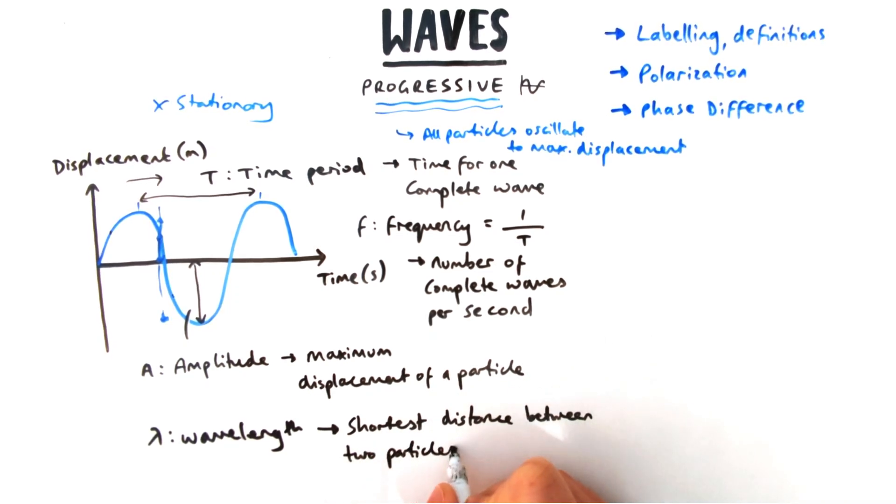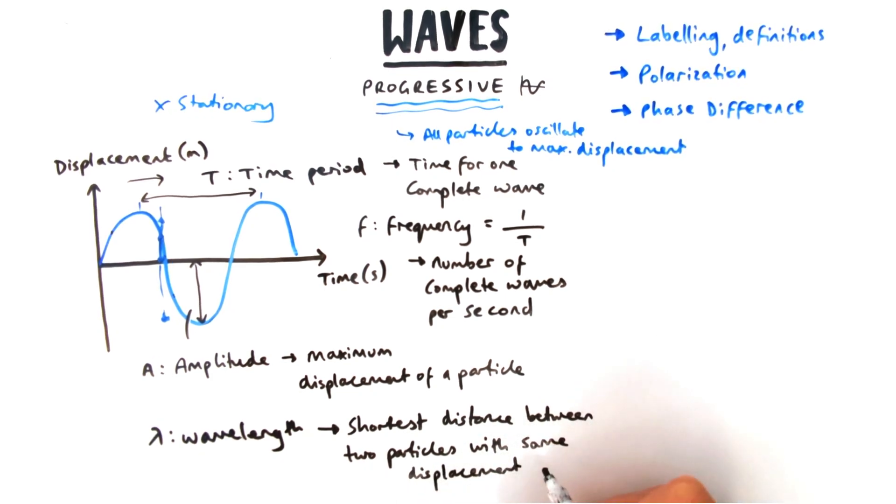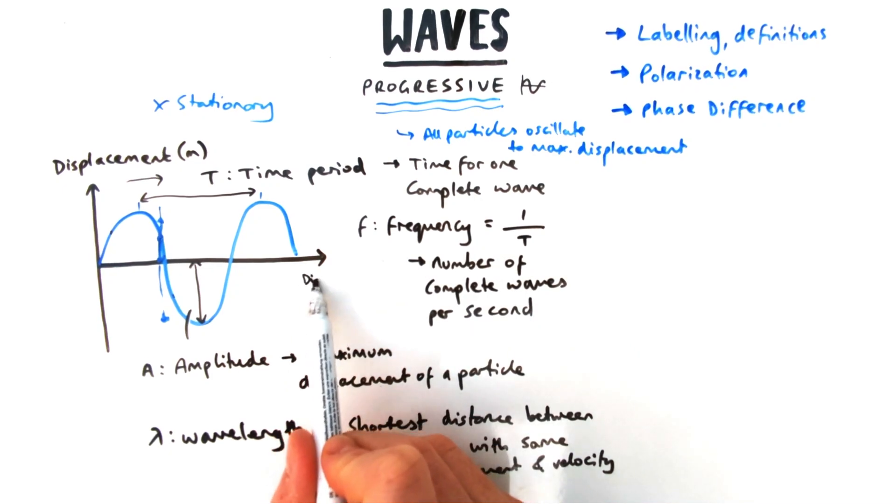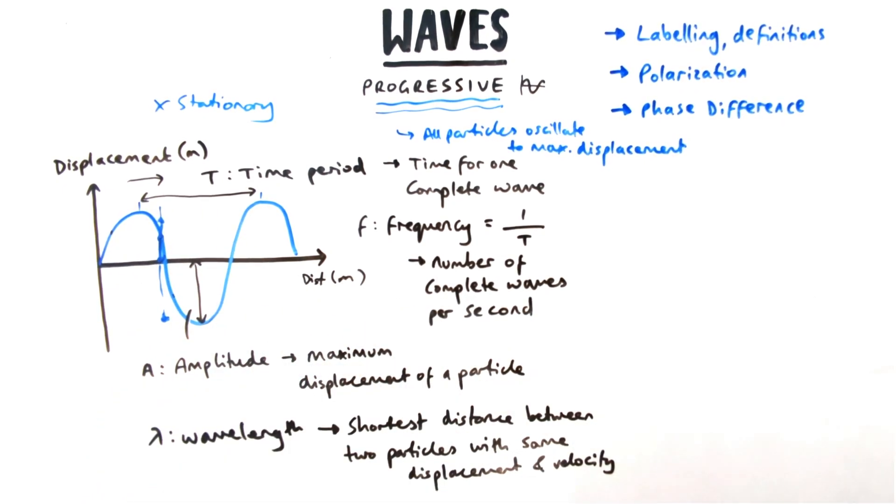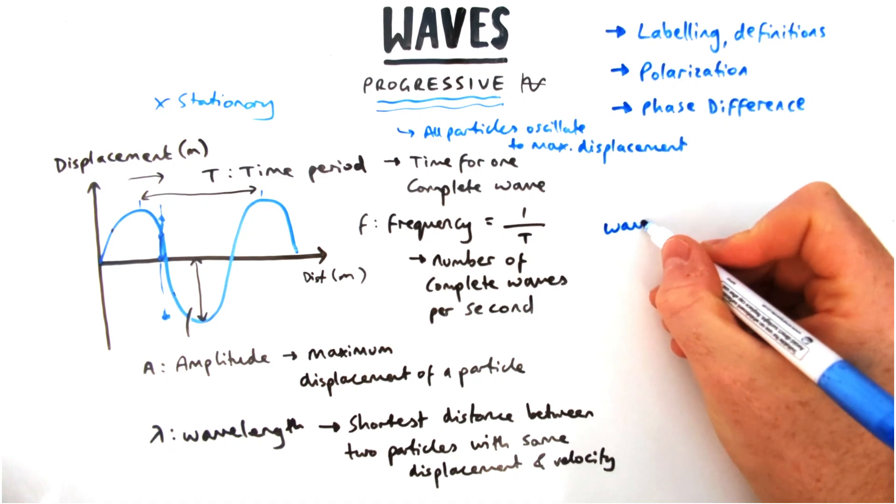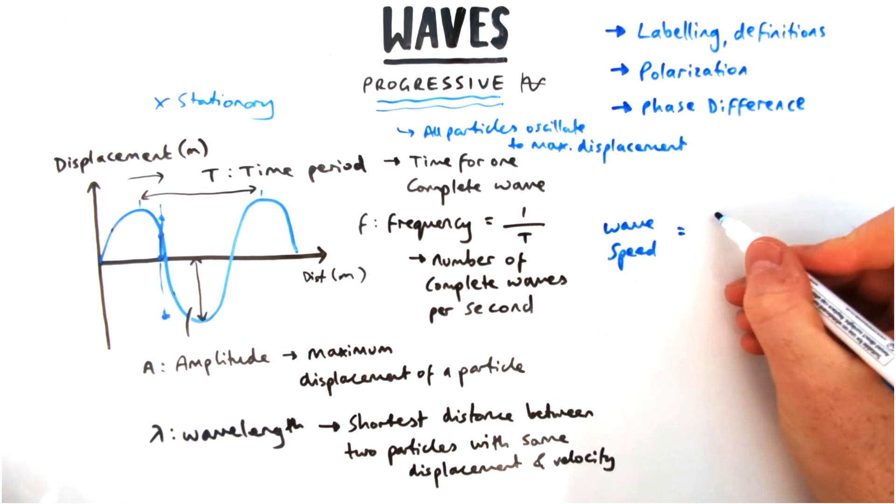The wavelength, which we should know from GCSE, is the shortest distance between two particles or two points in a wave that have the same displacement. I can't label it on my graph here because I've got time on my x-axis, but if I did have distance or displacement I could label it there instead.